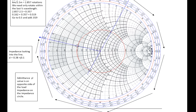We can also determine the load admittance, just as a side note, by extending the blue line from the source through to where the circle intersects in the southern hemisphere of the impedance circle, and we can find our load admittance. There are the two points: our impedance looking into the line and the load admittance. The load admittance isn't needed in this example, but for future reference, that's how you would perform that step.